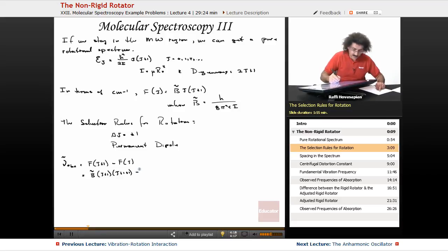After a bit of algebra, what we end up with is ν observed equals 2B times (J+1), where J equals 0, 1, 2. J is the initial rotational state.